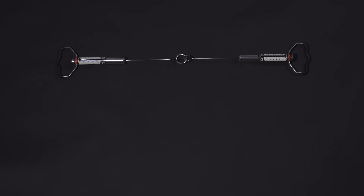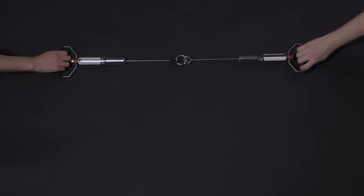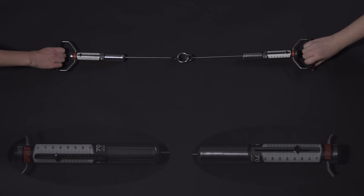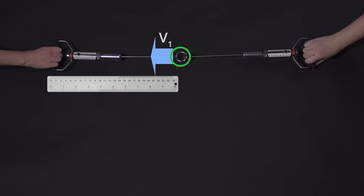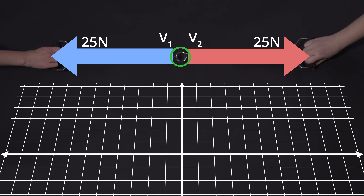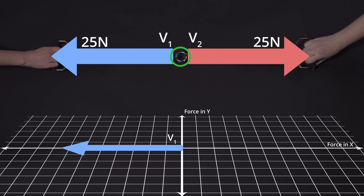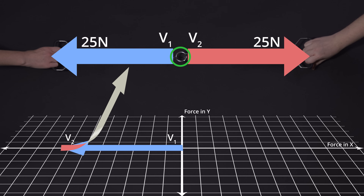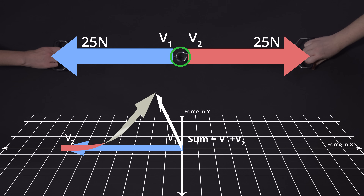We can quantify the forces involved in the tug-of-war by using spring scales, and in doing so verify that the forces are equal and opposite. We can add the vectors associated with these forces by making their lengths proportional to the loads they carry. We put the first vector, V1, on graph paper and place the next vector, V2, so that it starts where V1 ended. The distance between the tip of the last arrow added and the start of the first one is the vector sum.